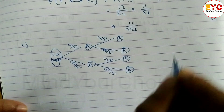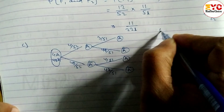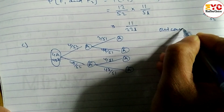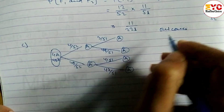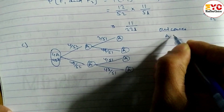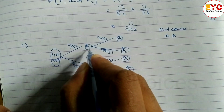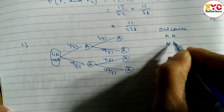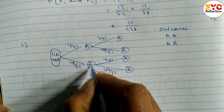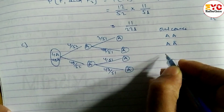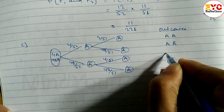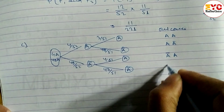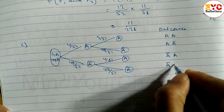So we can write out the outcomes from the tree diagram. The possible outcomes are: first ace and second ace, first ace and second non-ace, first non-ace and second ace, and first non-ace and second non-ace. These are all the possible outcomes.